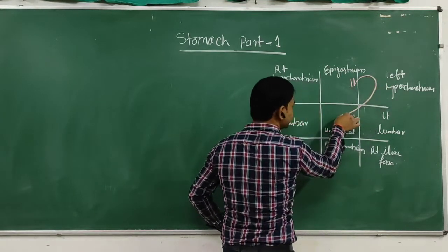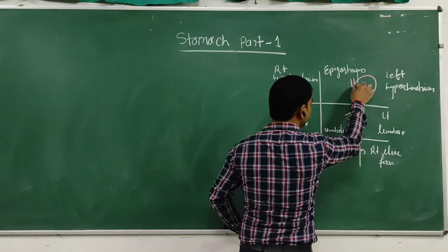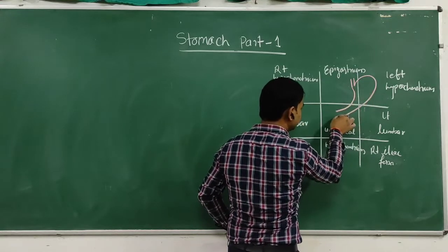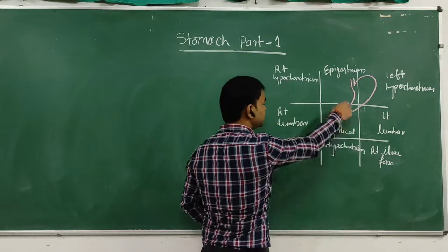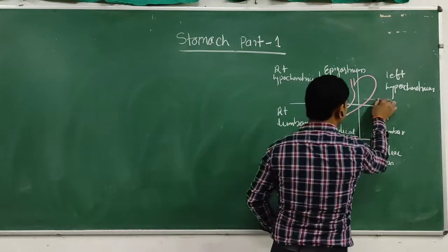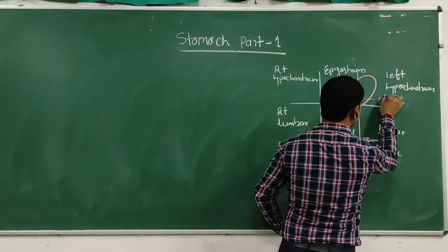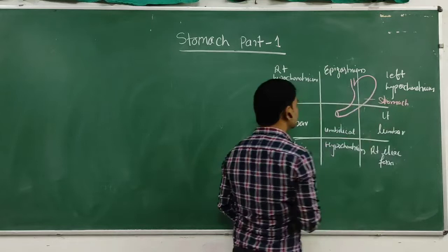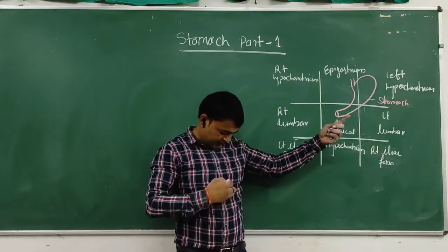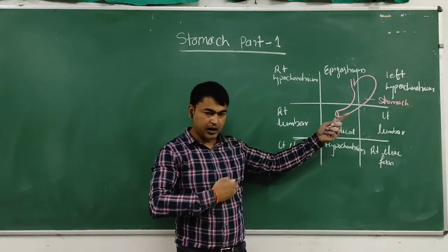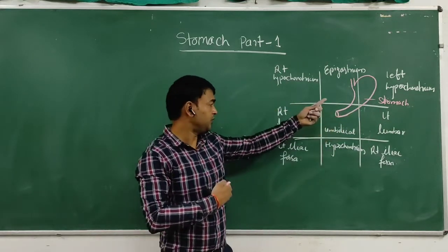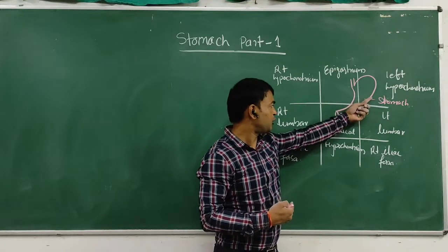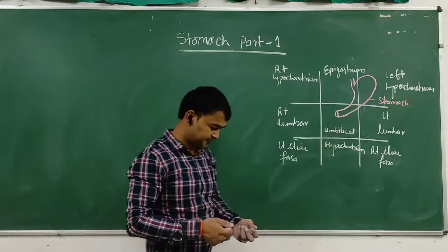The stomach is also located in the left hypochondric region and the umbilical region. So the location is the left and upper half of the abdomen, covering the epigastric, left hypochondric, and umbilical regions.